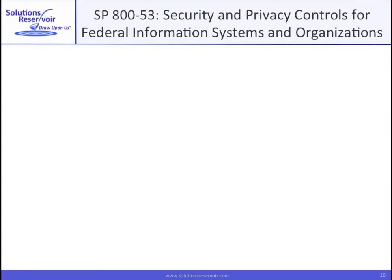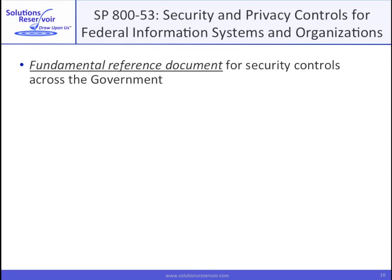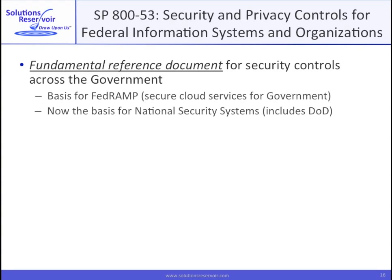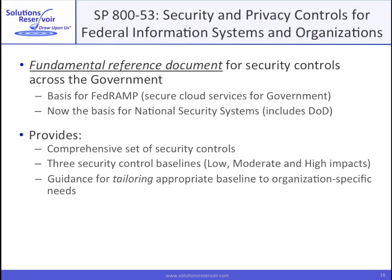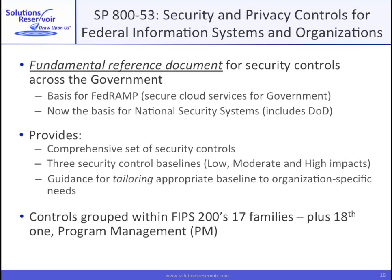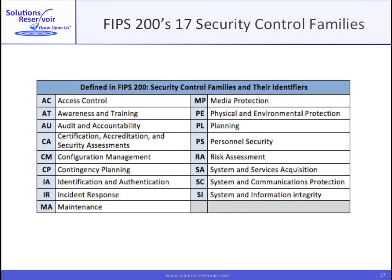NIST Special Publication 853 is the fundamental reference for security controls across the government. It's the basis for FedRAMP, and now even the basis for controls for national security systems, which includes DOD. SP 853 provides a comprehensive set of security controls applicable to FIPS 199 designated low, moderate, or high-impact systems, but is flexible and offers guidance for tailoring to specific needs. Controls are grouped within FIPS 200's 17 families, plus an 18th one — program management. Here are the 17 families again, plus the one for program management.